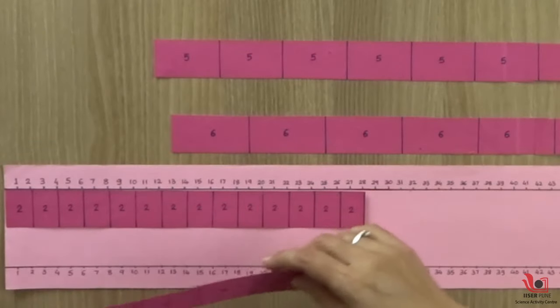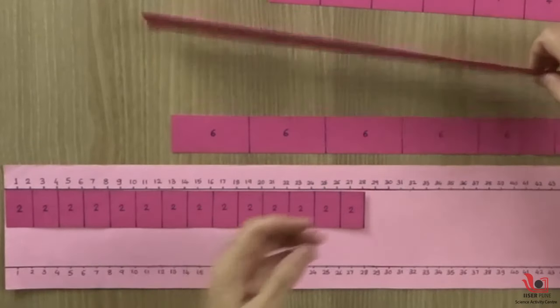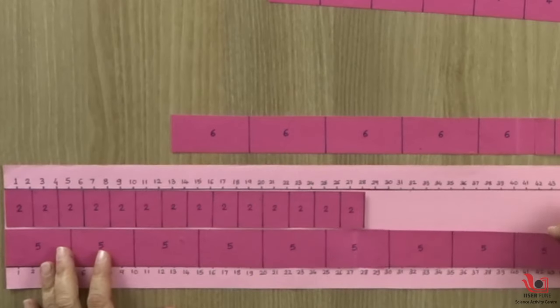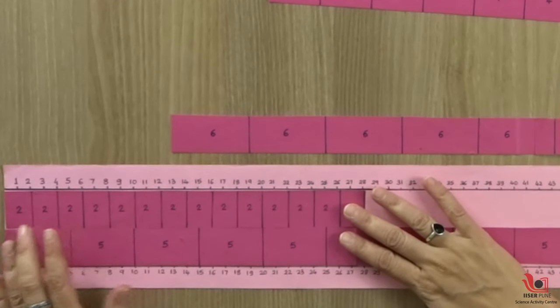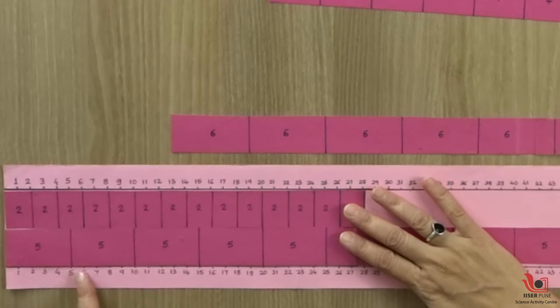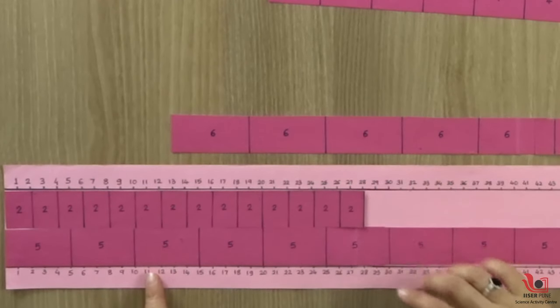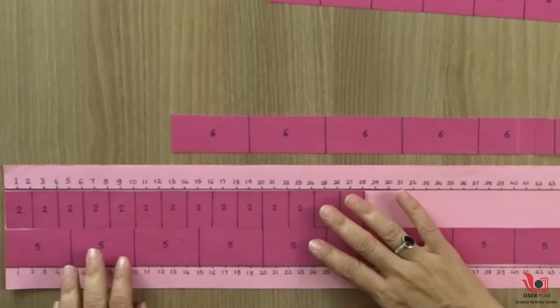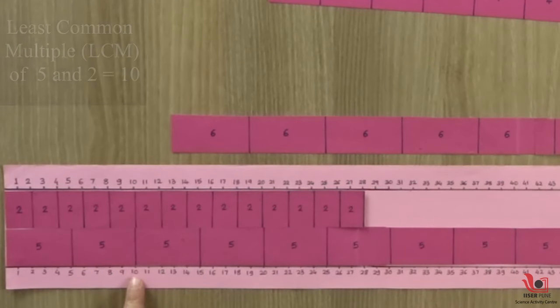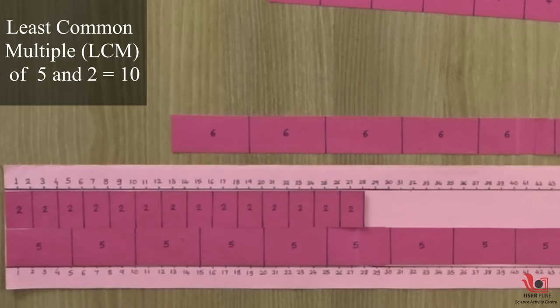Let us try this with other numbers. Suppose 2 and 5. Arrange the strips accordingly. See where the lines coincide. They are coinciding at 10. So 10 is the LCM of 5 and 2.